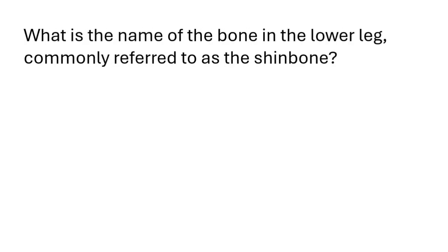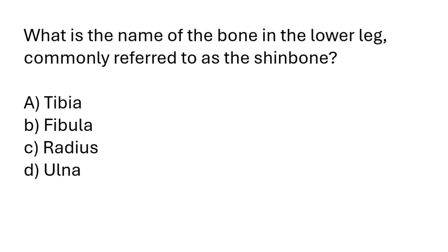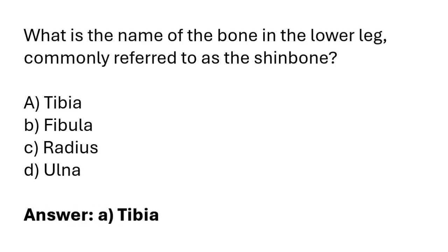What is the name of the bone in the lower leg commonly referred to as the shin bone? Humerus, femur, tibia, fibula. The correct answer is option A: the tibia is the name of the bone in the lower leg commonly referred to as the shin bone.